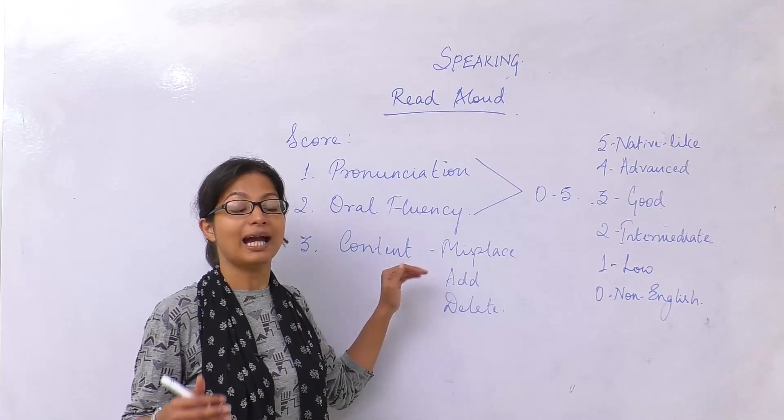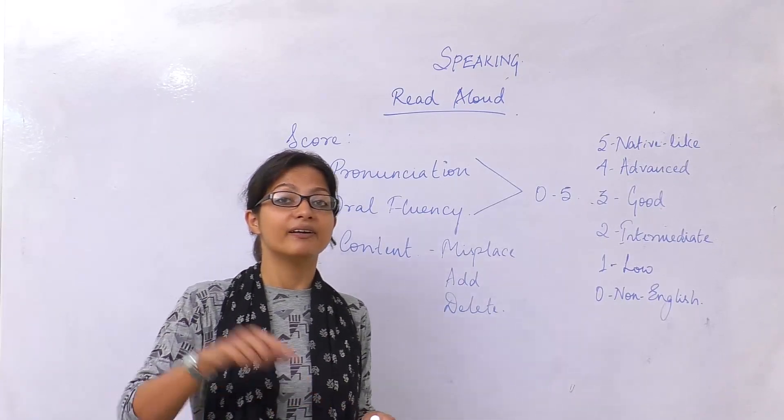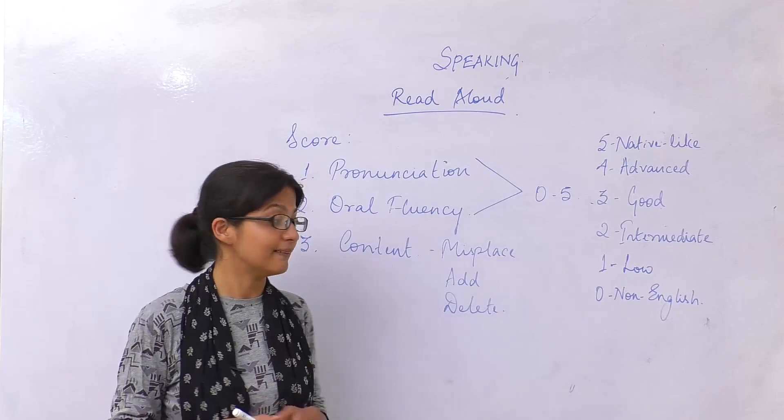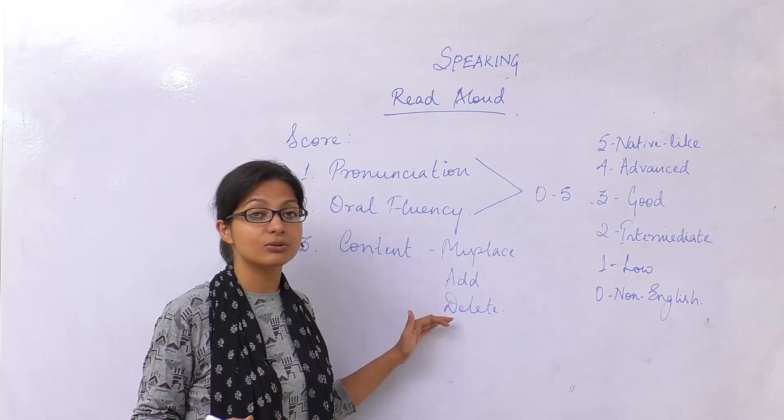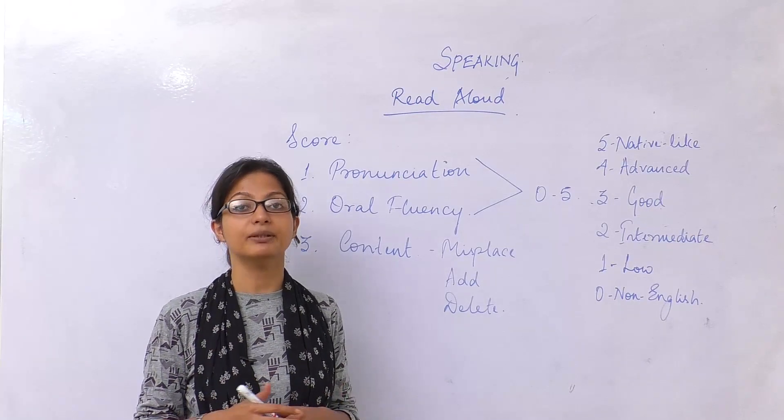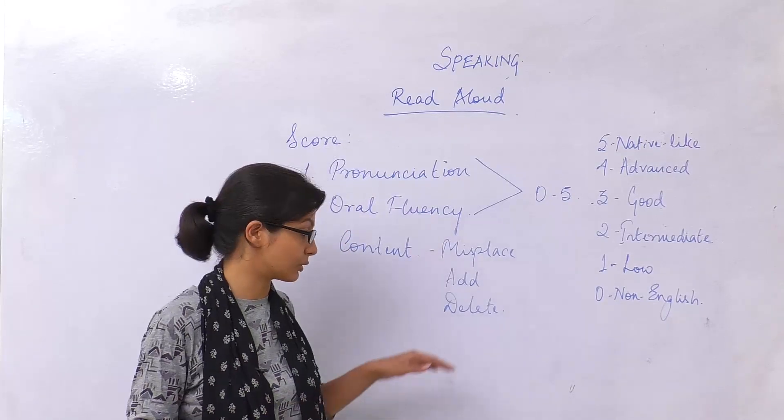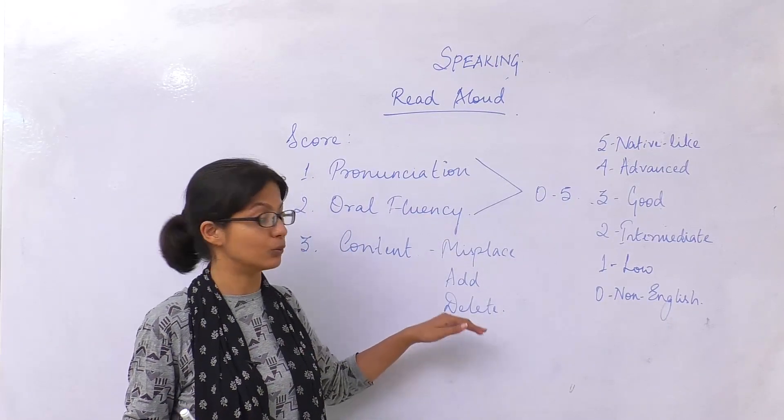If you happen to add something extra in the sentence, for example if you say 'the smoking is injurious to health,' you lose marks. And you also lose marks when you omit or delete a word from the sentence. For example, 'smoking is injurious health,' you omit the word 'to' and thus you lose marks.